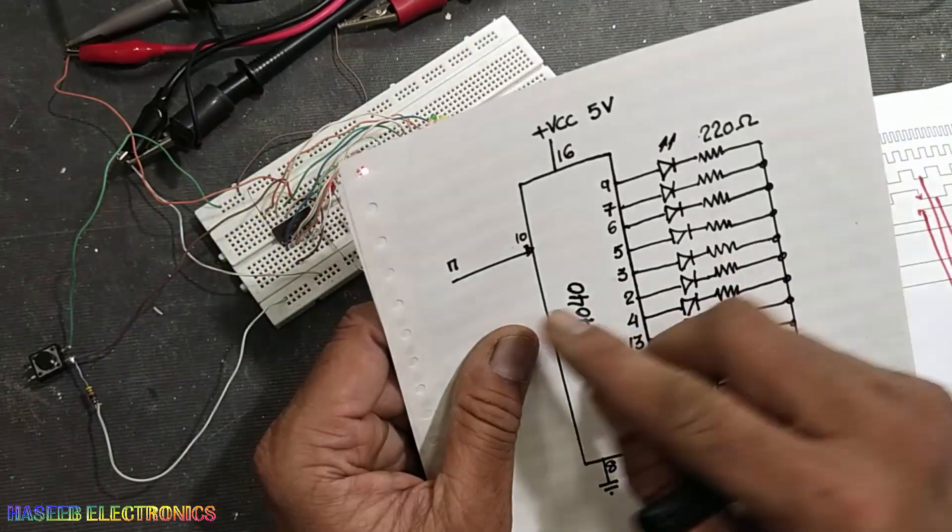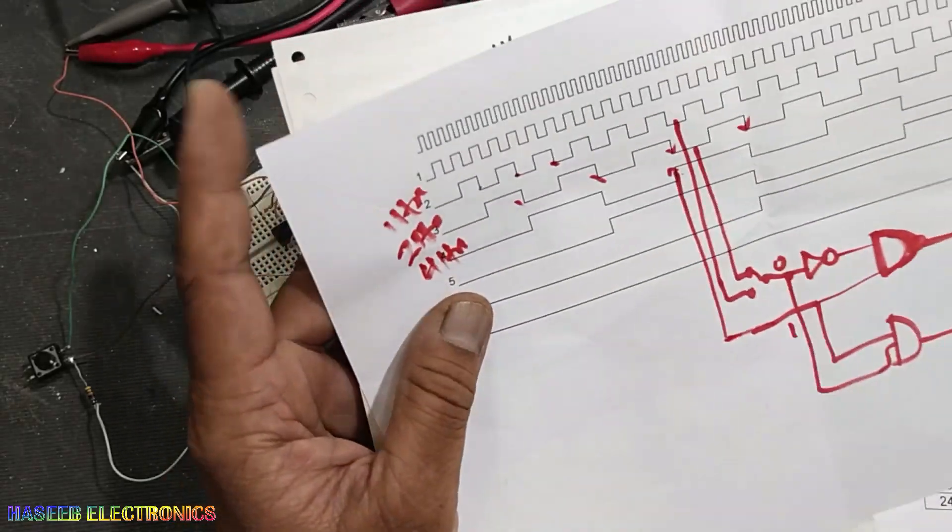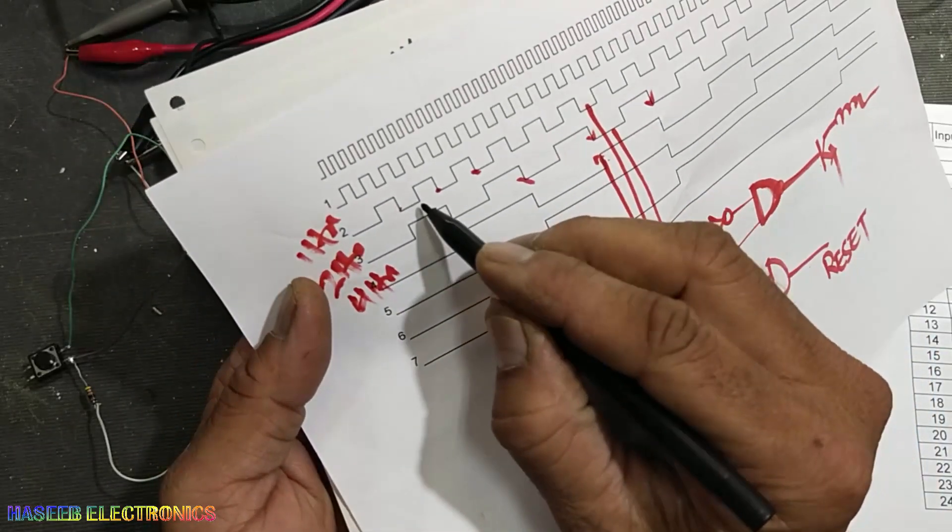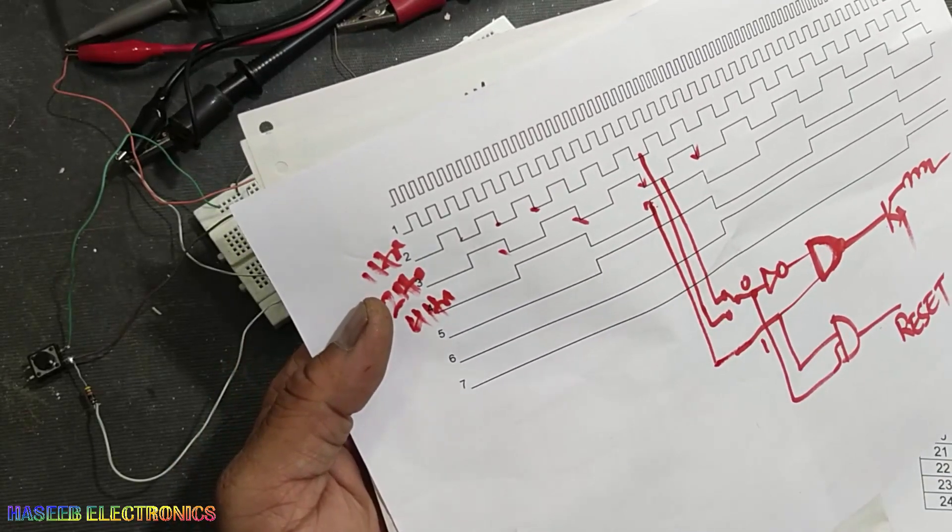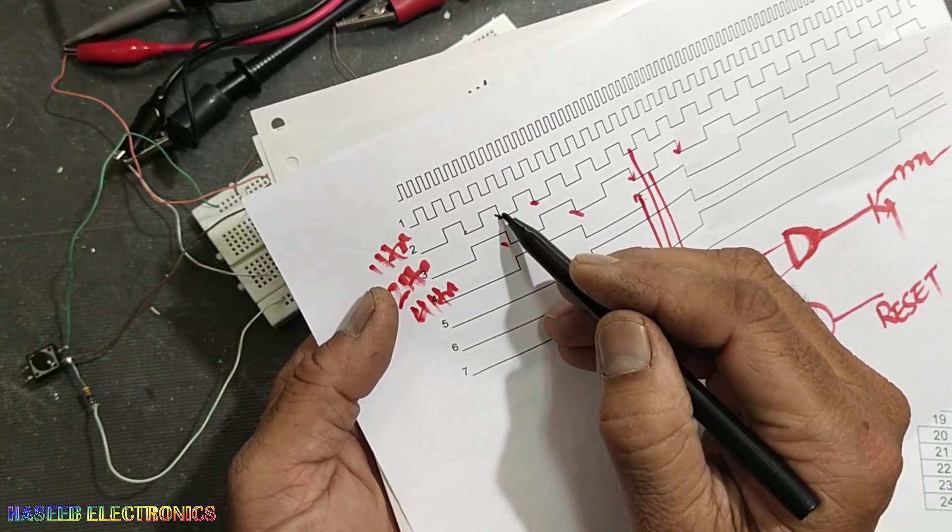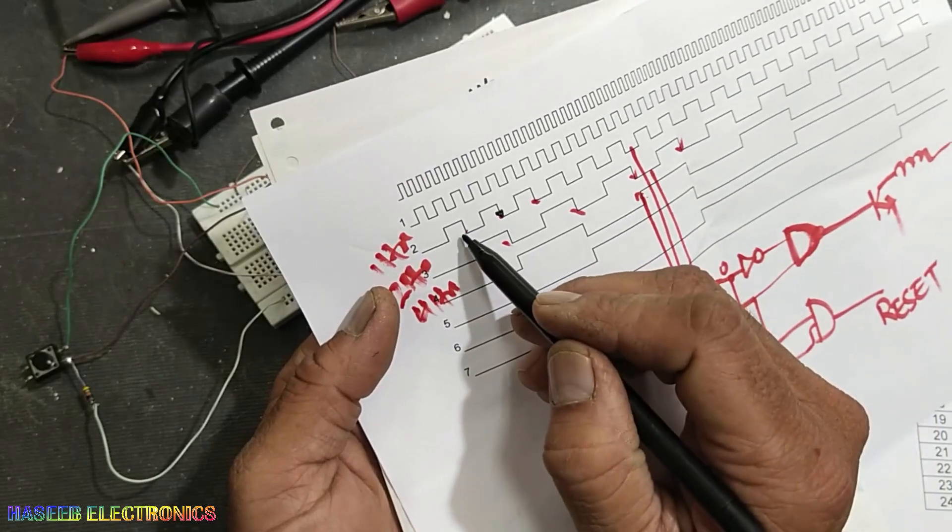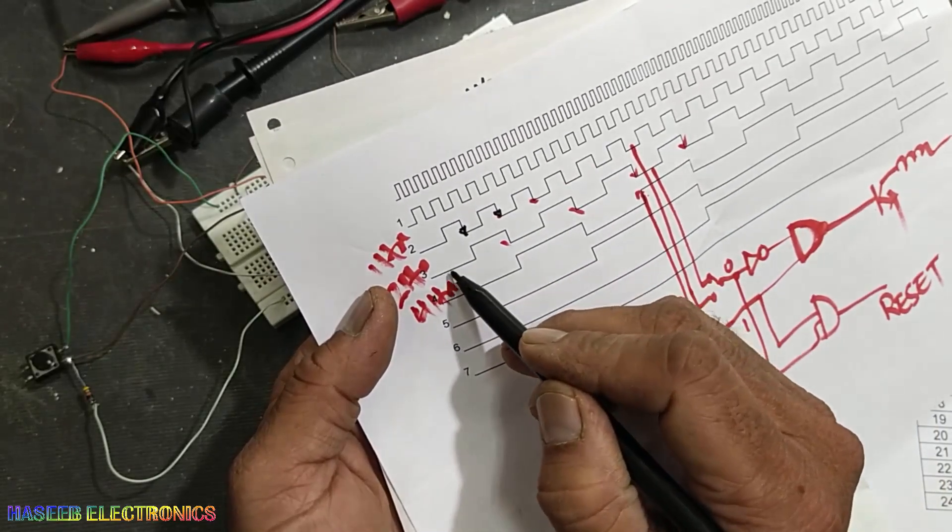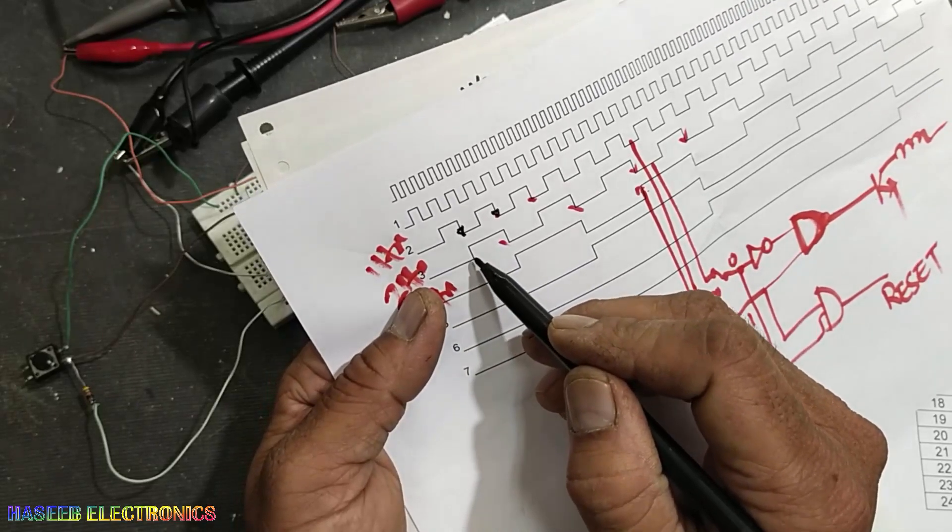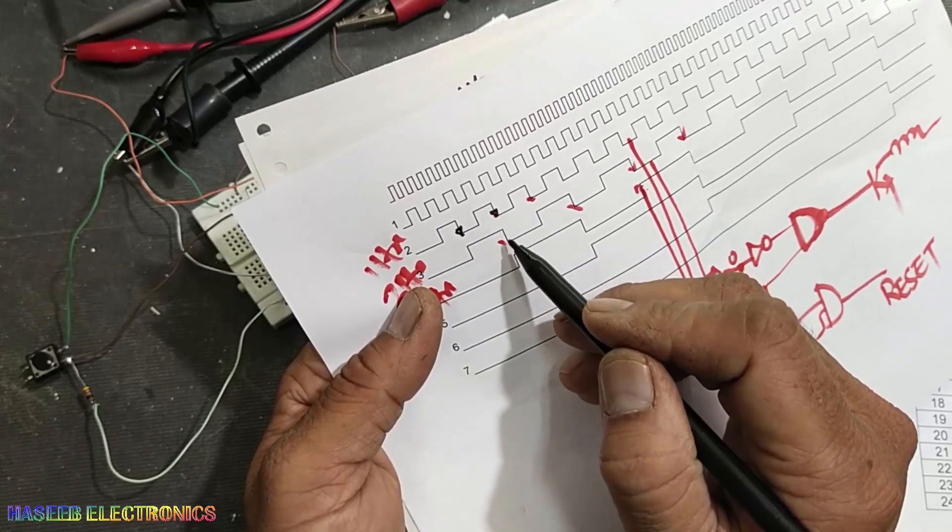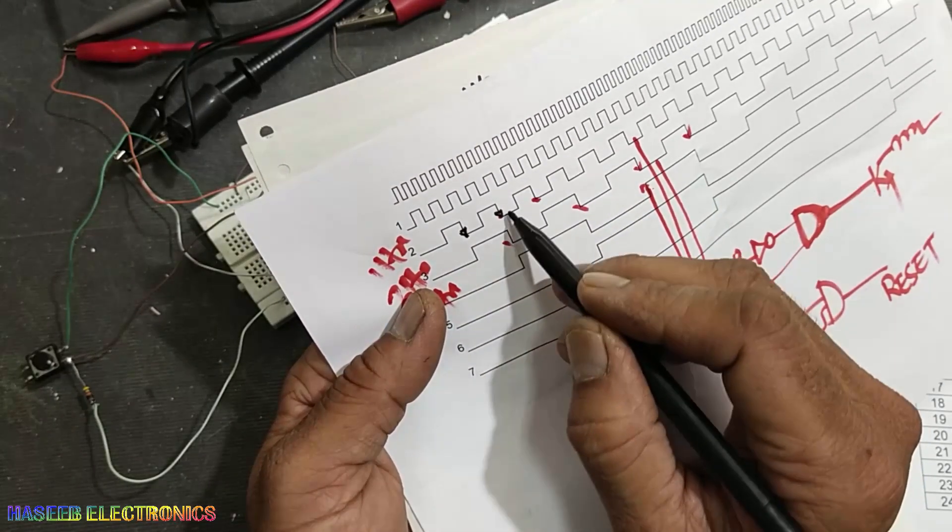The working phenomena of this counter is when the pulse reaches the trailing edge. This is the rising edge and this is the trailing edge. When it reaches the trailing edge, it will switch the next stage. At the first trailing edge of this pulse, if pin number 3 is low, it will go high. At the next trailing edge in the clock input, it will switch the next cycle.